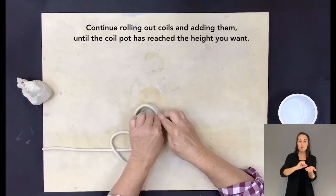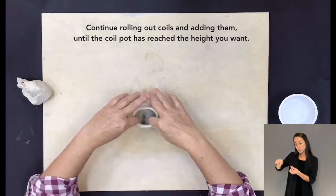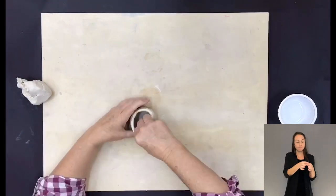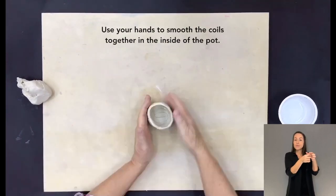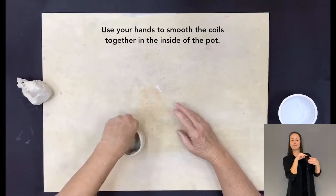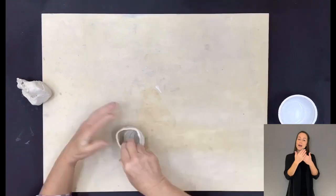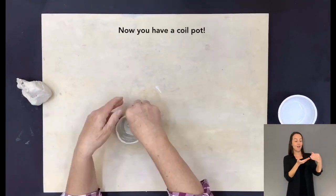Continue rolling out coils and adding them until the coil pot has reached the height you want. Use your hands to smooth the coils together in the inside of the pot. Now you have a coil pot.